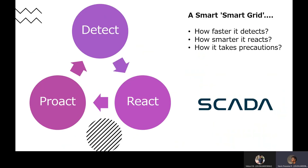Therefore the key functionalities of a Smart Grid are to detect the variation in the system, react according to the variation, and proact to prevent the system from any damages. With upcoming new technologies, Smart Grids are getting smarter by how fast they detect the mismatch, how smartly they react to the problem, and how they provide a better solution.